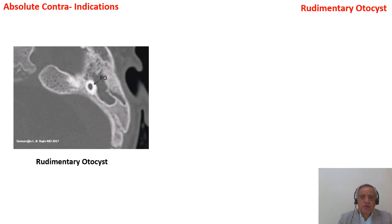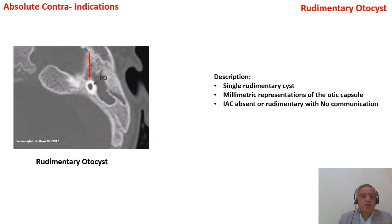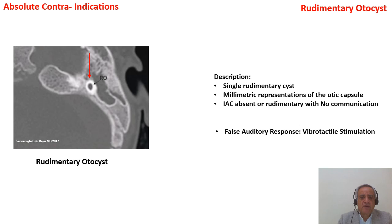The second absolute contraindication is the rudimentary otocyst — a small, submillimetric cavity which is not related to the internal auditory canal. Sometimes the internal auditory canal is rudimentary or absent, and this system is not connected to it. This is different from cochlear hypoplasia type 1, which is bud-like and has a vestibular system. Here it is only one rudimentary cavity. The same pitfall of false auditory response or vibrotactile stimulation applies here also.